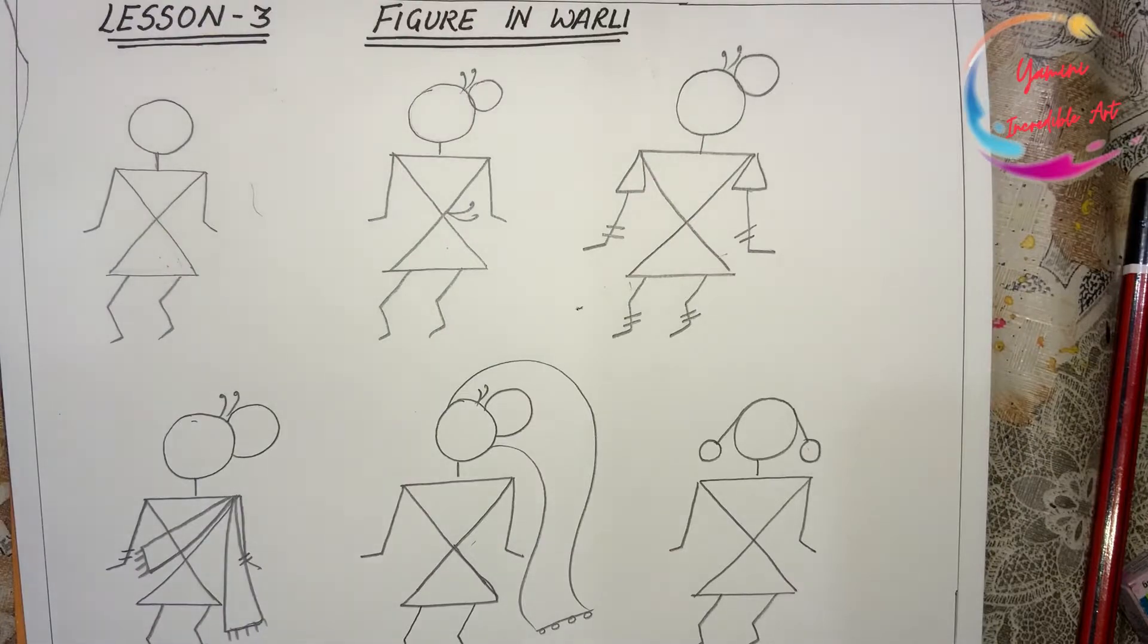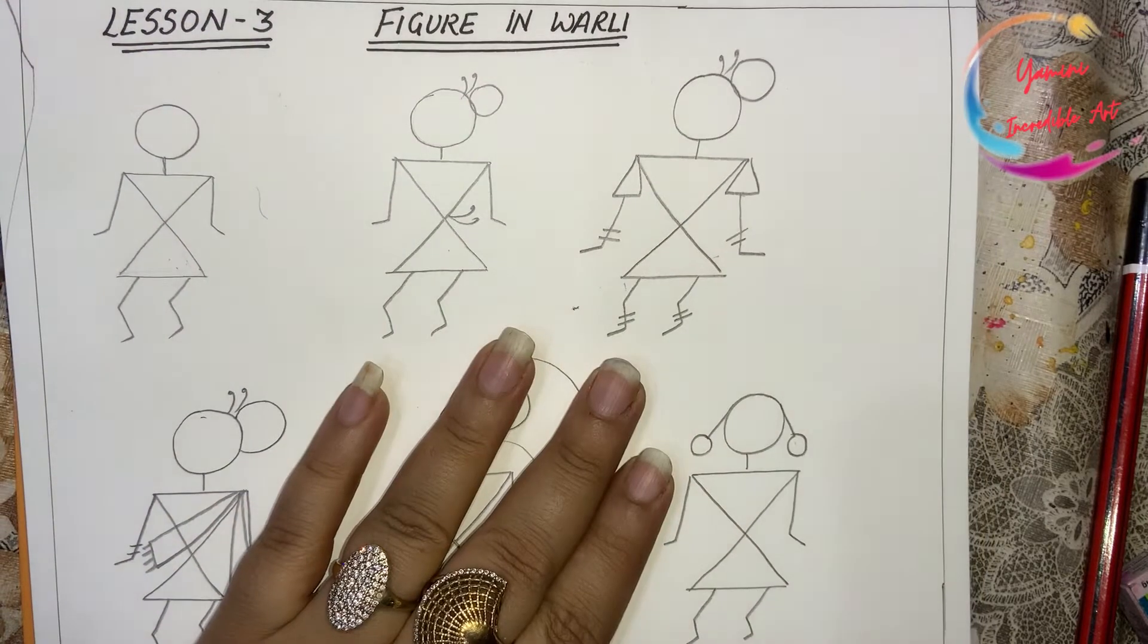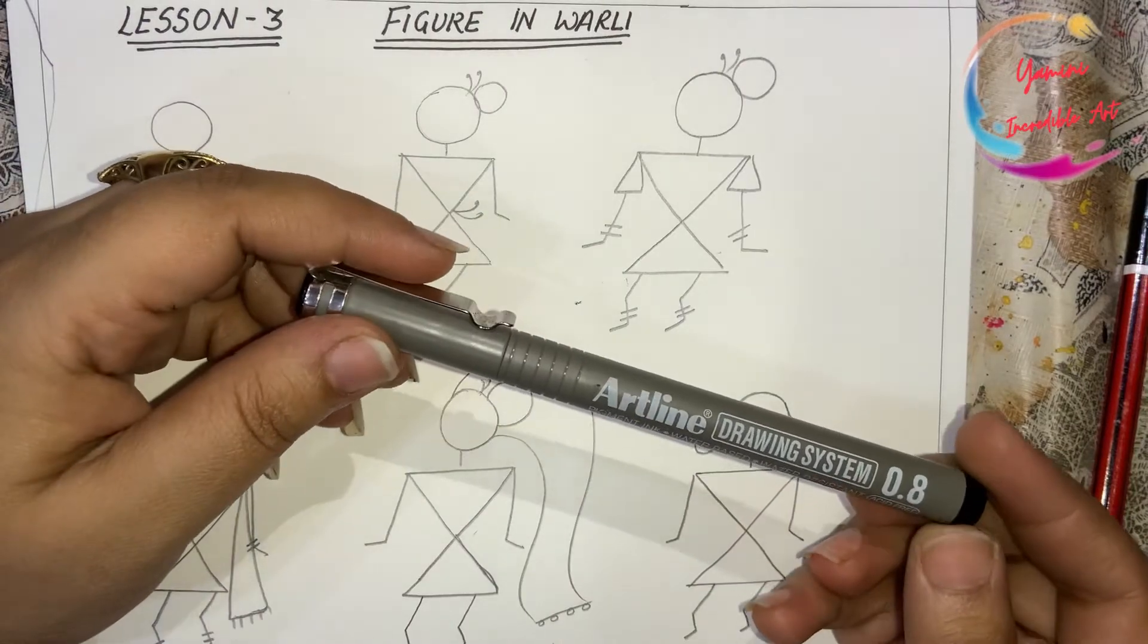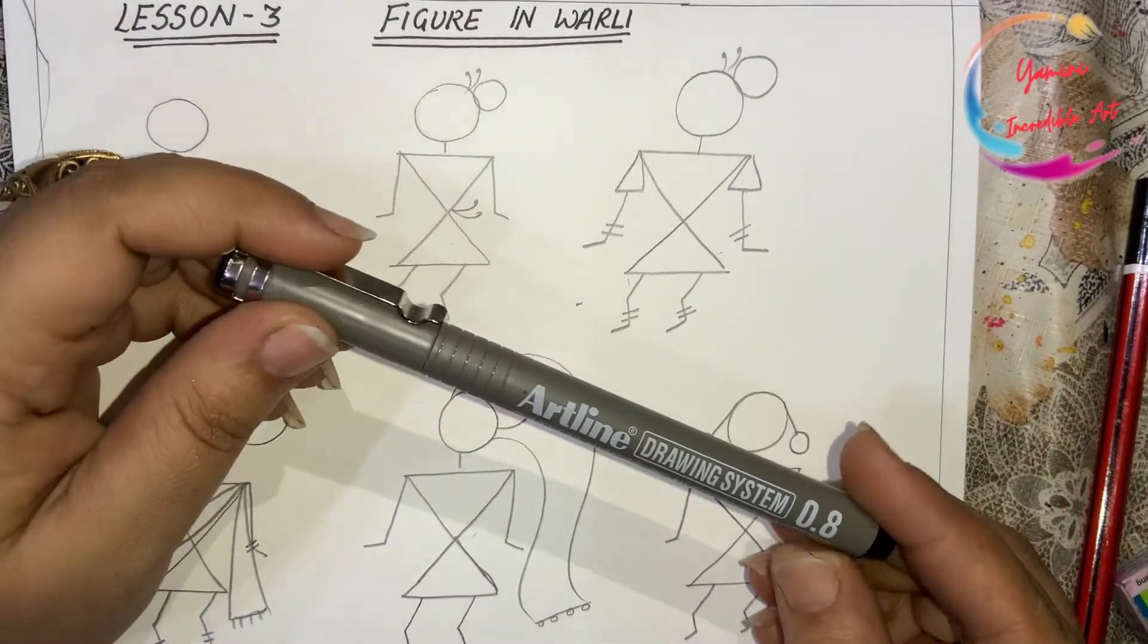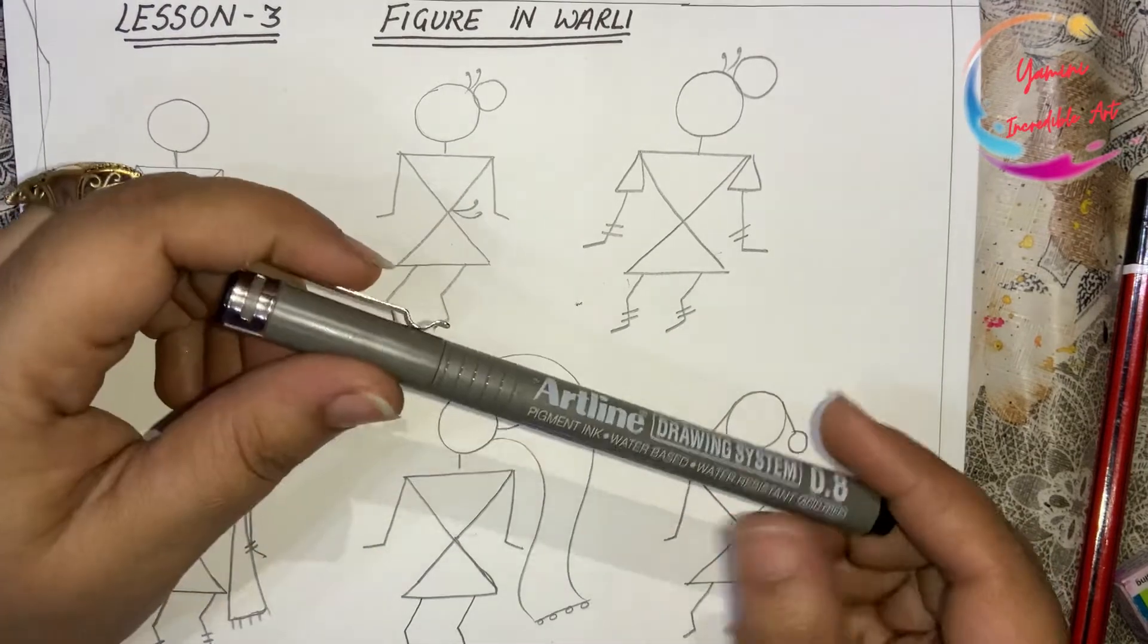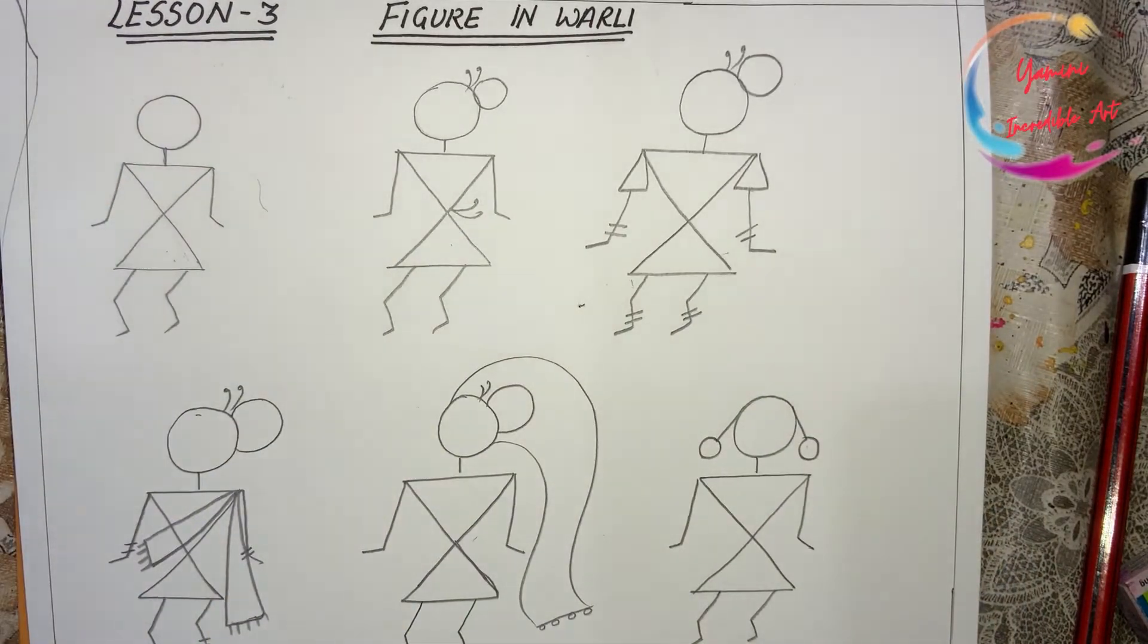So friends, now I am going to color these figures. I am using Artline Drawing System pen. I will give you this link in the description box. But if you have any sketch pen, any pen, or any black pen, you can color it. You can use it. Okay, so now we will start coloring.